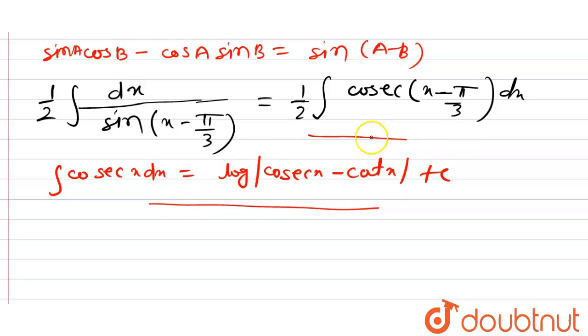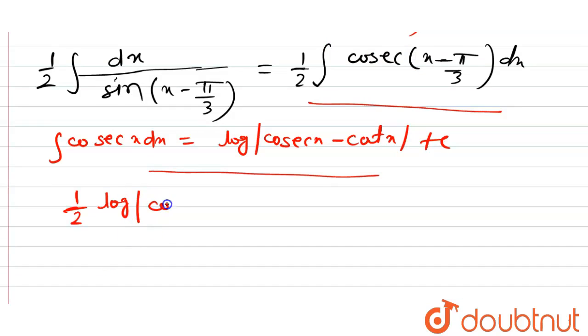Hence, integration of this is equal to 1 by 2 into log mod of cosec x. Here, in the place of x, we have x minus pi by 3.